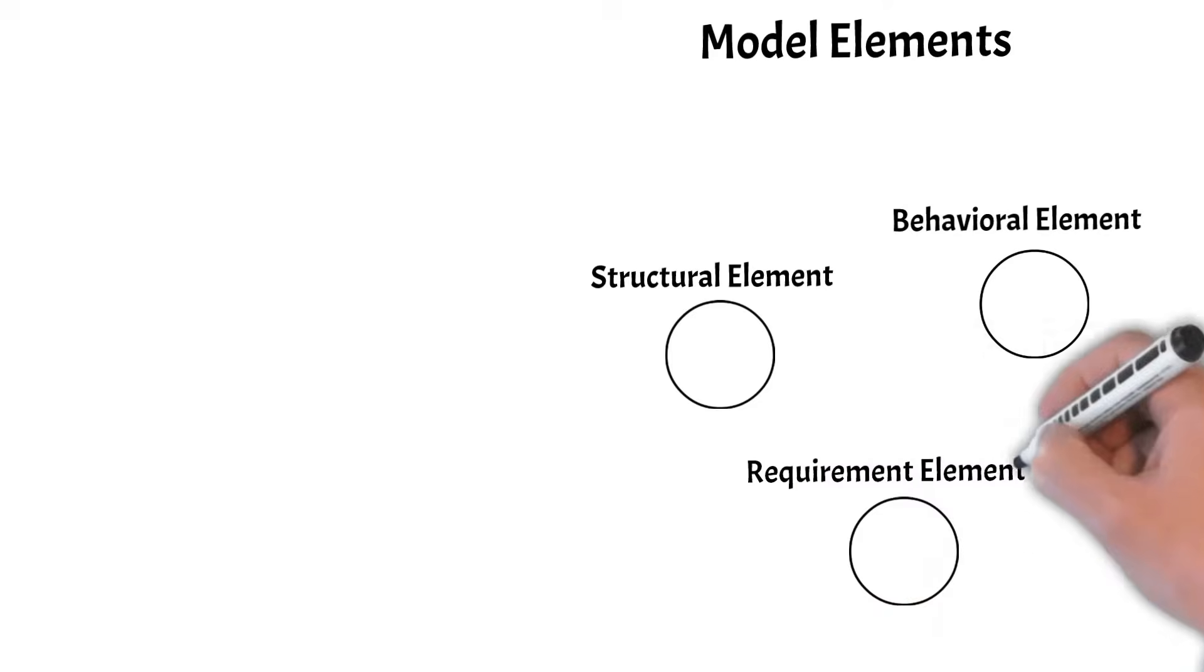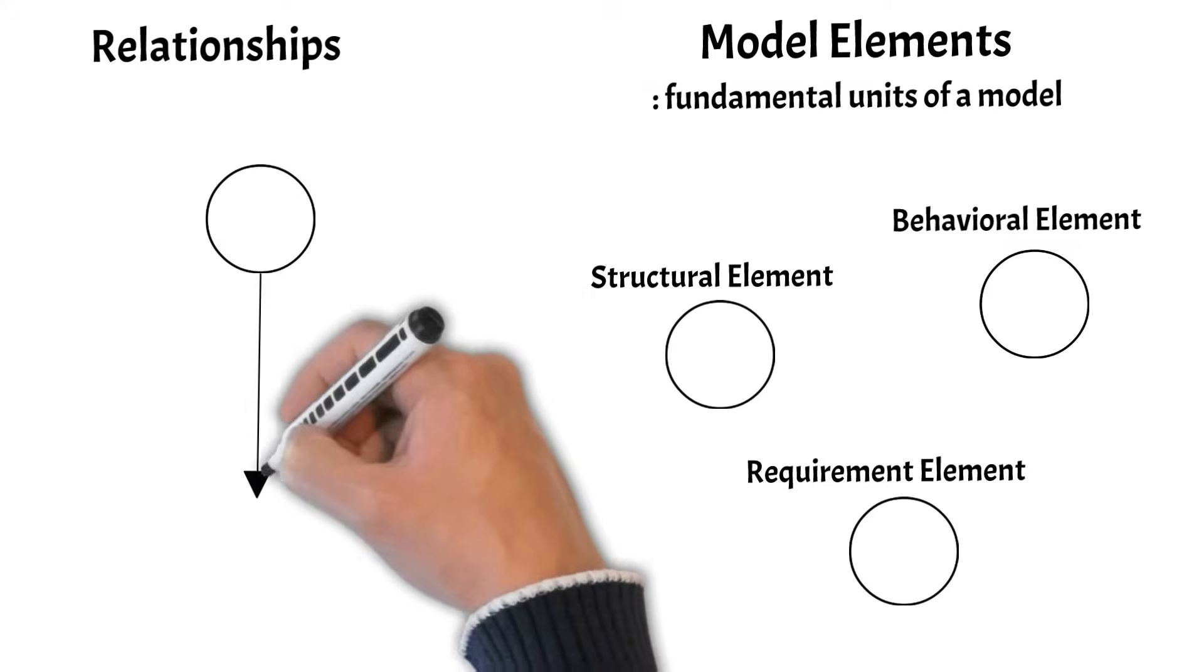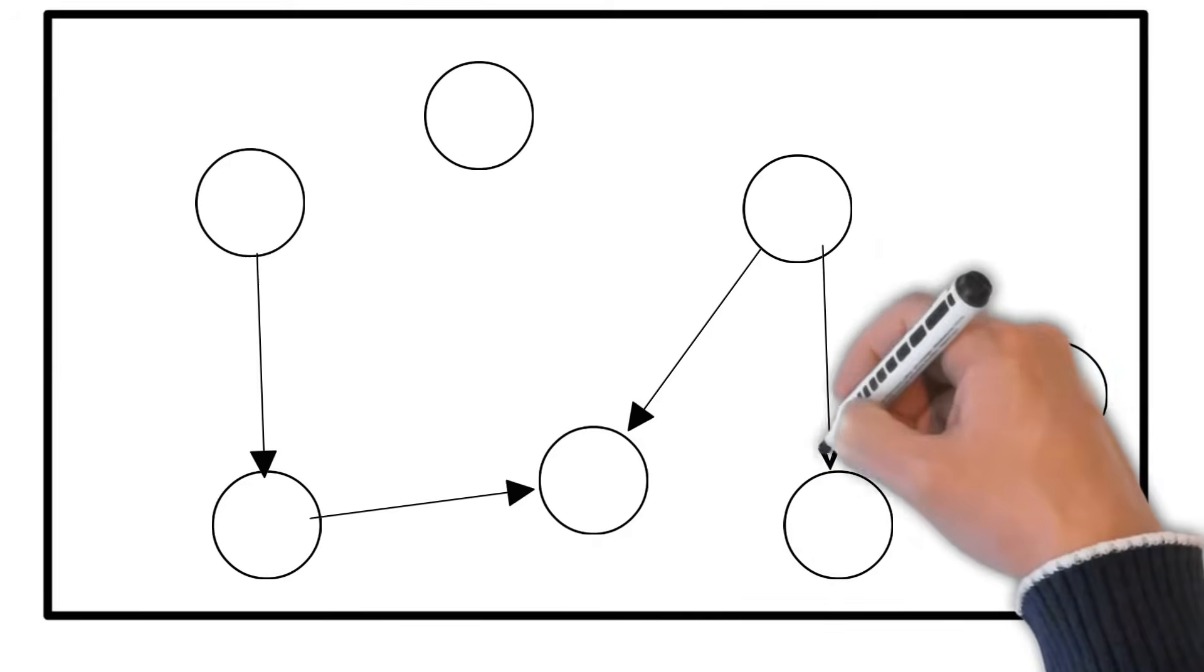Model elements are the fundamental building blocks in a model. These elements can be units of structure, behavior, or requirement. Relationships connect elements within a model. A relationship is a linkage between two types of elements. The web of interconnected elements through relationships creates the detailed system model.